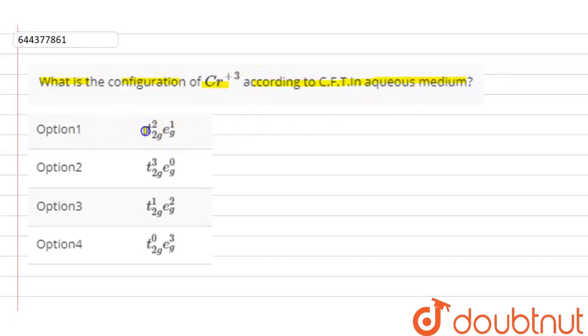Options are T2G3, T2G2 EG1, T2G3 EG0, T2G1 EG2, T2G0 EG3.